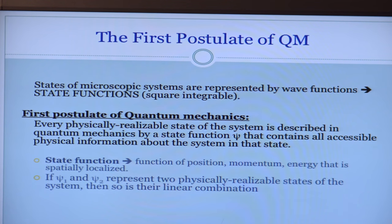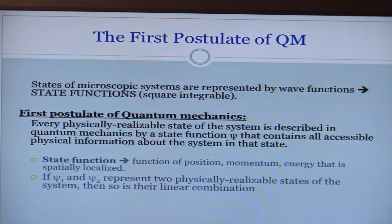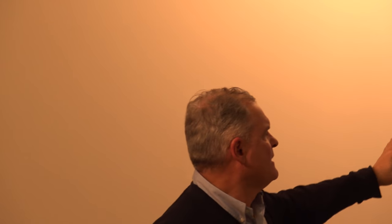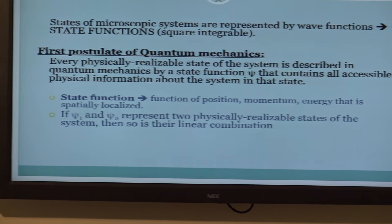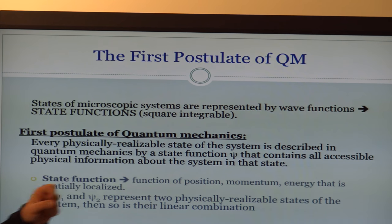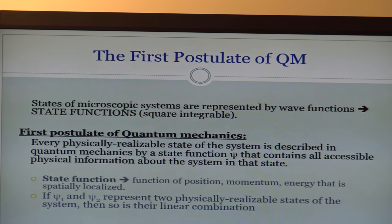Now the postulates of quantum mechanics. After all of this matured and many more experiments were performed and explained, these luminaries formulated quantum physics in terms of postulates. The first postulate says that every physically realizable state is described in quantum mechanics by a wave function or state function psi — a probability distribution that contains all accessible information about the system.